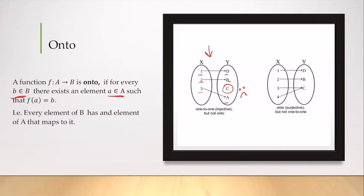This function is onto, but it's not one-to-one because the c has two y values. So not one-to-one, but it is onto because every element in our target was hit.